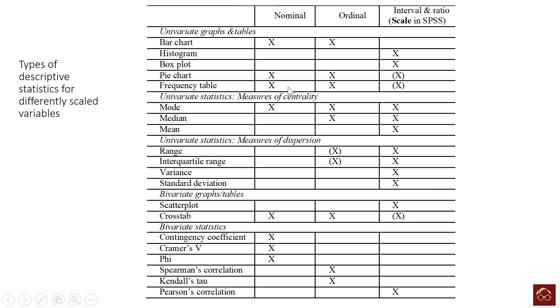These are among the univariate graphs and tables. These three are valid to do for nominal, and the same applies to ordinal.